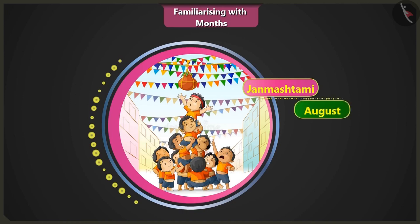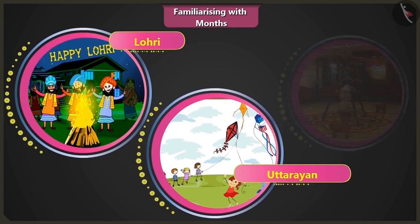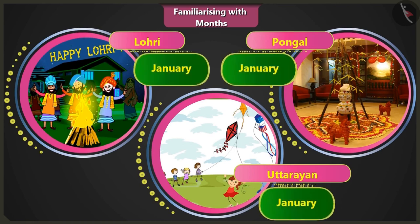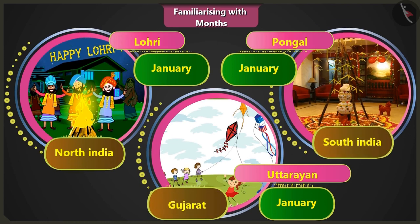Janmashtami is the festival of the birth of Shri Krishna, celebrated in the month of August. And Lohri, Uttarayan and Pongal — these 3 festivals are celebrated in the month of January. Lohri in North India, Uttarayan in Gujarat and Pongal in South India. All 3 festivals are celebrated in January.